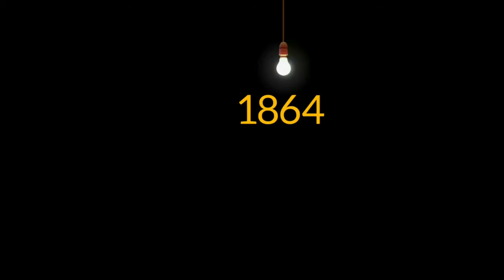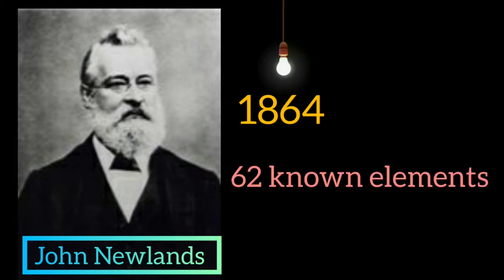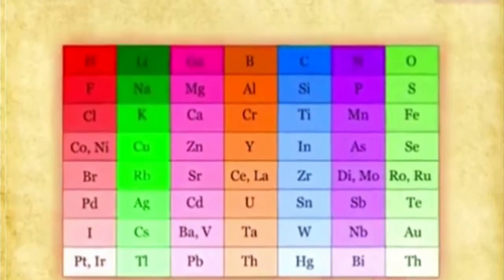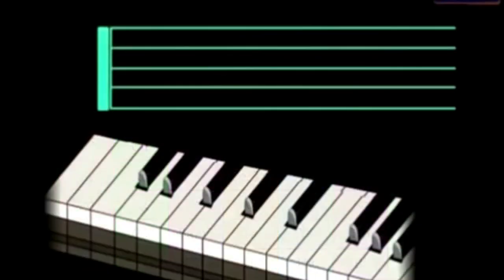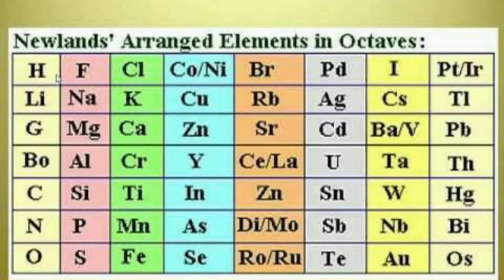The next attempt was made in 1864. British chemist John Newlands presented a classification of the 62 known elements. When arranged in increasing order of atomic mass, he found that every eighth element had properties similar to that of the first. He compared this to the octaves formed in music, and the classification is known as Newlands' Law of Octaves. But Newlands' table left no gaps for possible future elements and in some cases had two elements at the same position in the same octave.